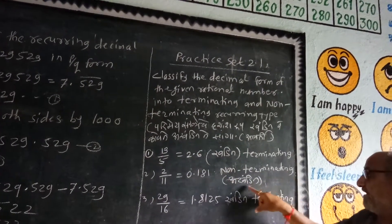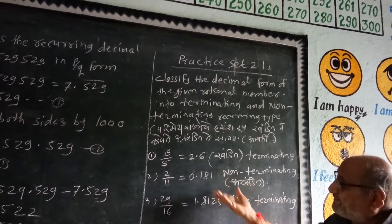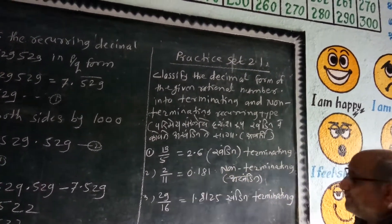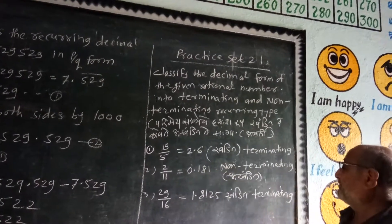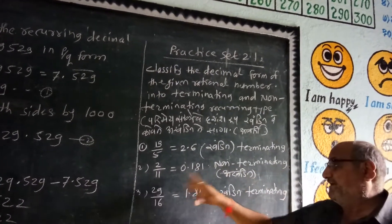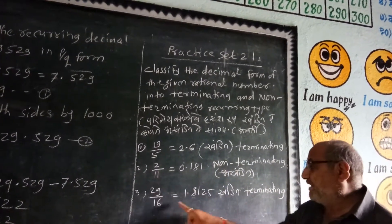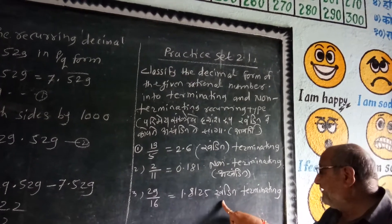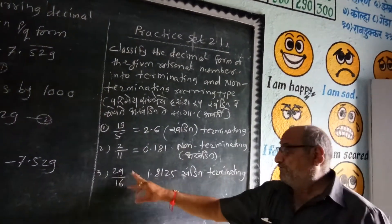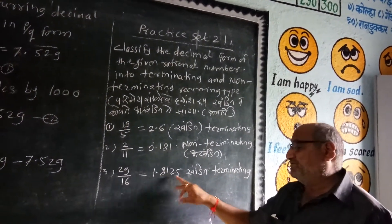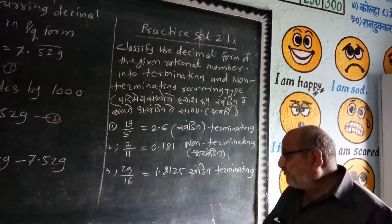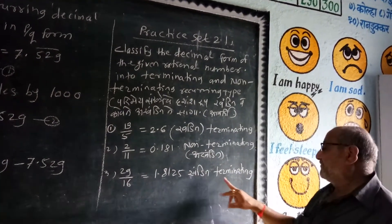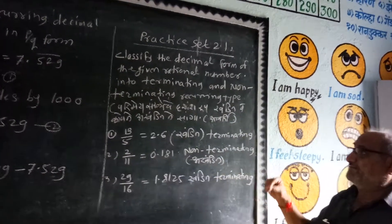Non-terminating, can be terminating if the denominator contains only factors of 2 or 5. If it contains factors other than 2 or 5, it's non-terminating. When the denominator has only 2 or 5 as factors, it's terminating.